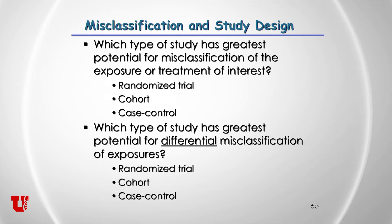Which type of study has the greatest potential for differential misclassification of exposures? Case-control studies are really at a disadvantage here. The mothers example: in a cohort study, there may be some error but it should be equal because they don't know their outcome. In a case-control study, they do know their outcome, and study staff knows too. Trying to equally measure variables for cases and controls after the outcome has already happened means case-control studies have the most potential for differential misclassification of exposures.